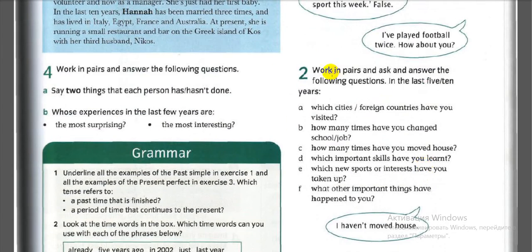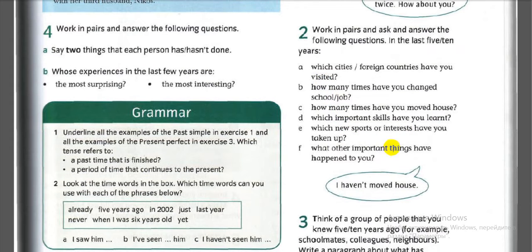Next exercise: ask and answer questions about the last five or ten years. For example: 'How many times have you changed school in the last five years?' Let's speak together — I'll read each question and after each one, pause and answer. Have you been to any foreign countries in the last five years? How many times have you changed your job? How many times have you moved house in the last ten years? Which new sports or interests have you taken up in the last ten years?